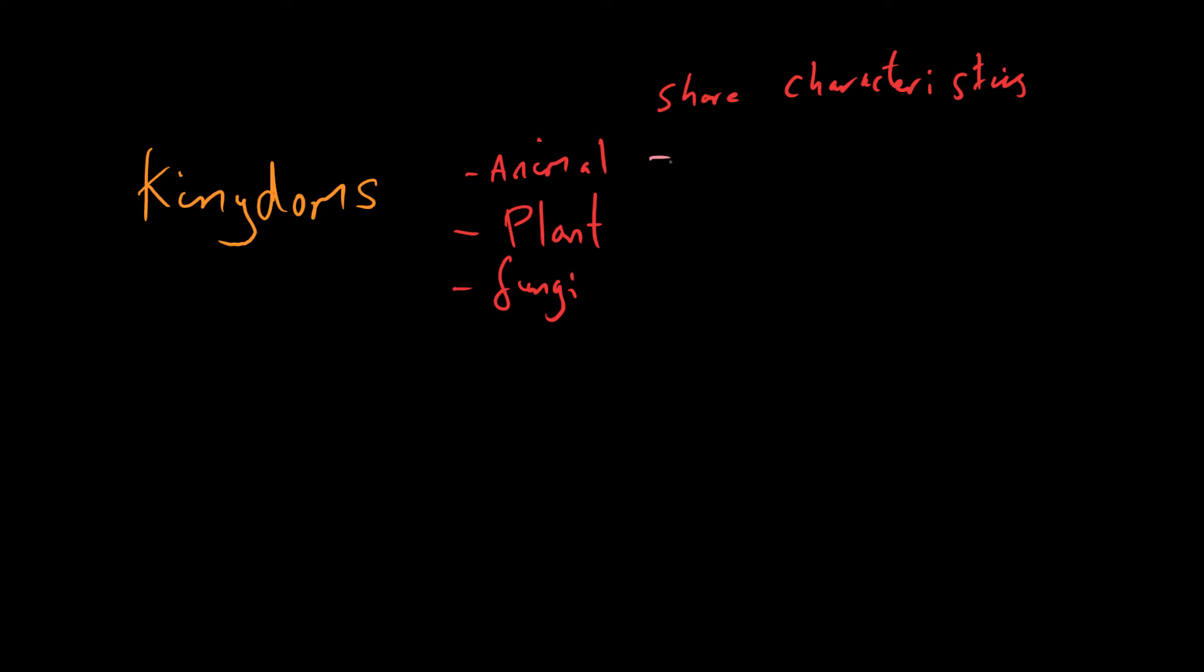And those characteristics are going to be different to organisms which are grouped in the plant kingdom and in the fungi kingdom and so on. For example, animals are defined as being able to move around. So, they can move their entire body. We're also multicellular organisms as opposed to bacteria. But moving your entire body, that is a very much animal thing to be able to do. Plants can't do that.